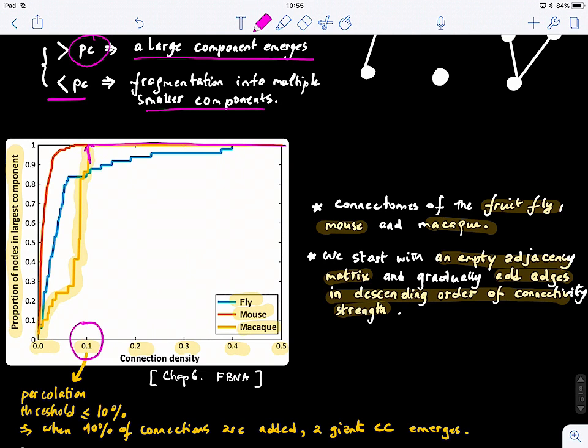But below this threshold, below like the 10%, our network is still fragmented. So this percolation threshold is very important in studying. And you can see there is some patterns and behavior, like behavior pattern when we study the connectomes of different species.